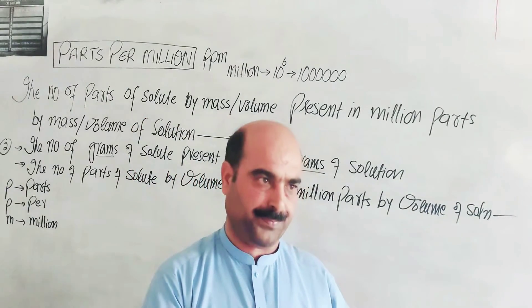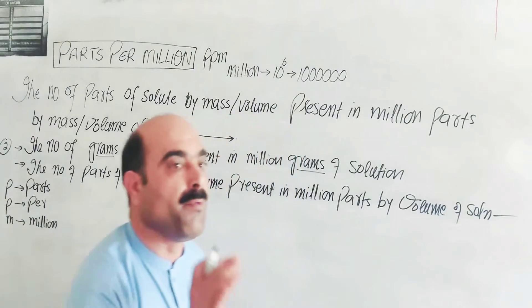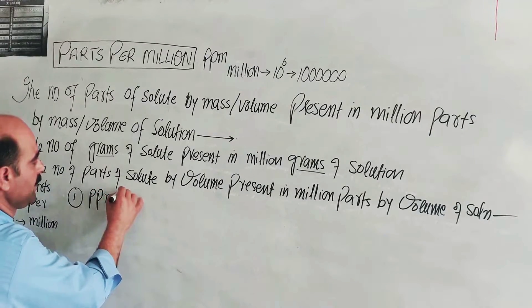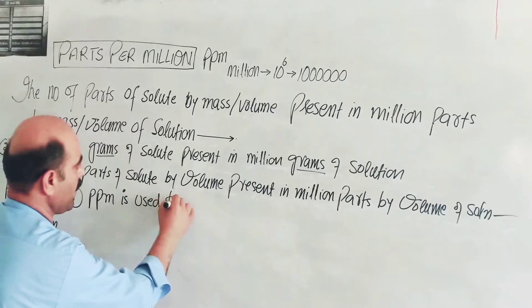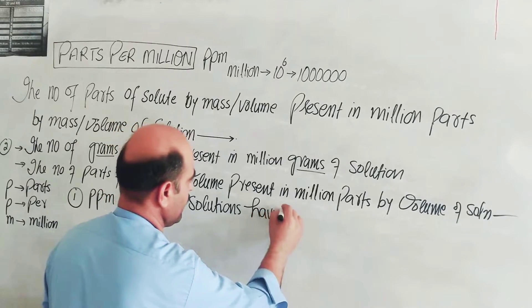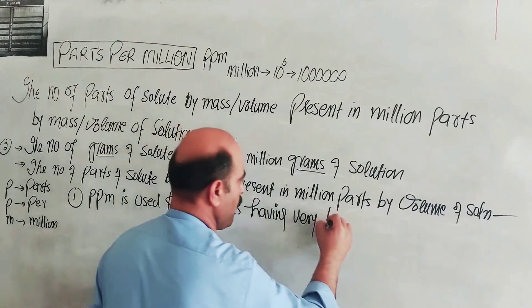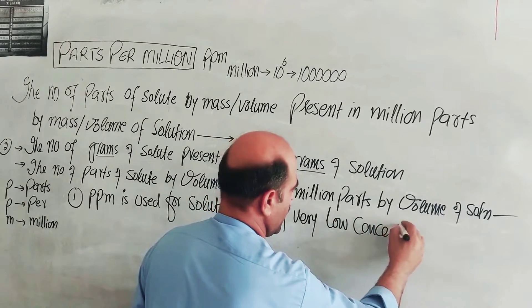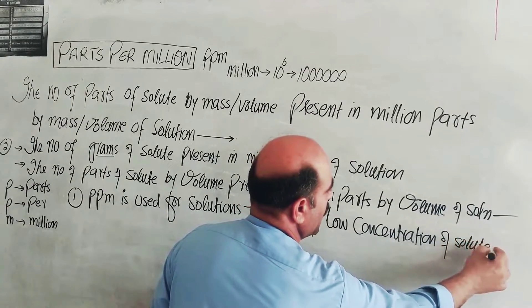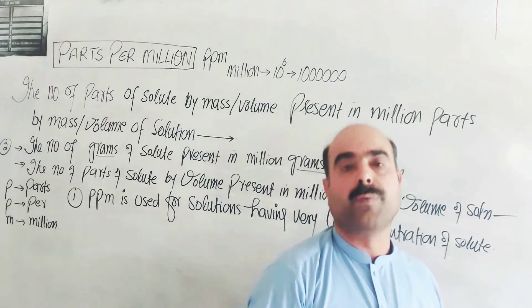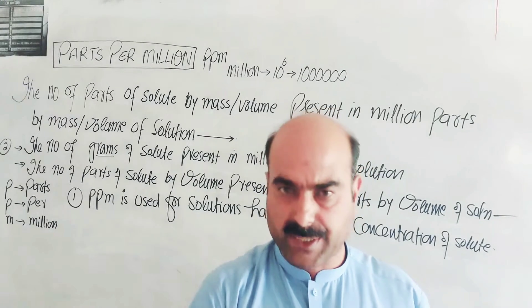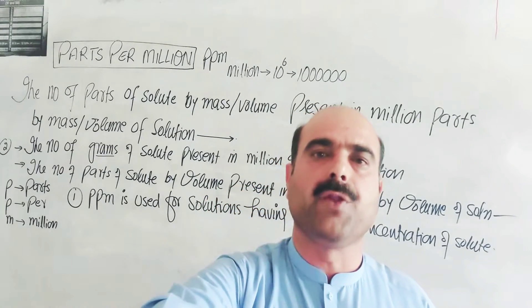Parts per million is used for solutions having very low concentration of solute. The concentration of solute is very low — the number of parts by mass or by volume and the power of 10 is negative, so it is a very small value. In order to convert this small value into a larger, more convenient value, we use the concentration unit PPM.